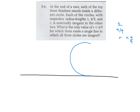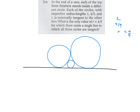The big circle has radius 1, the medium has radius 4 over 9, and r is even smaller. I'll draw the big one, then the medium, then the small one, all sitting on the line. It's not a perfect diagram, but it gets the point across. Now let me draw some centers and connect them.